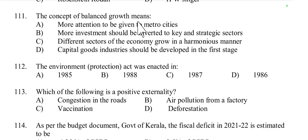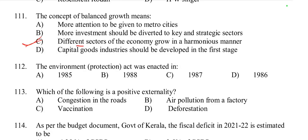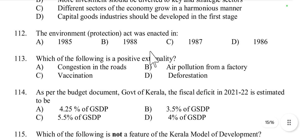Question 111: The concept of balanced growth means different sectors of the economy grow in a harmonious manner. In balanced growth, the primary, secondary, and tertiary sectors all grow simultaneously in a coordinated way. Option C is correct.